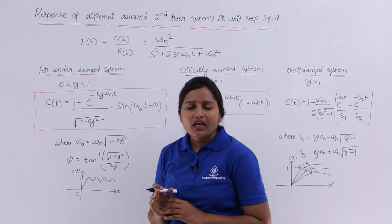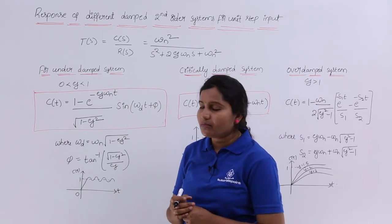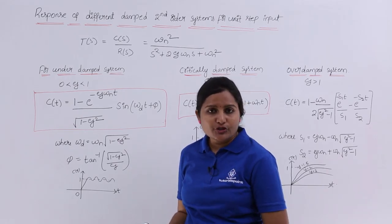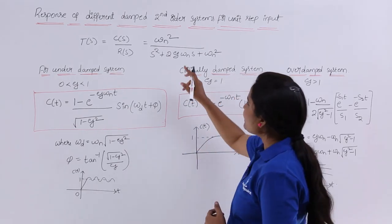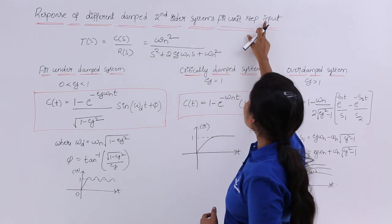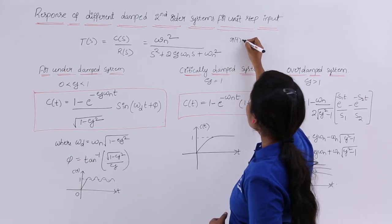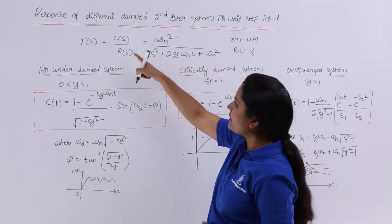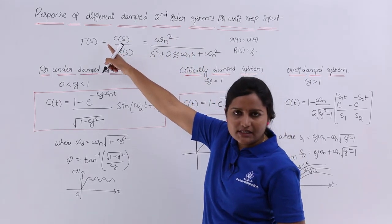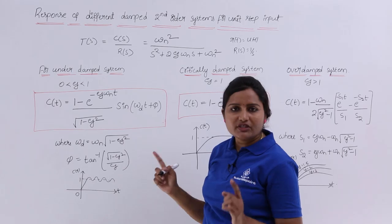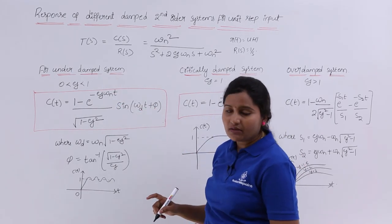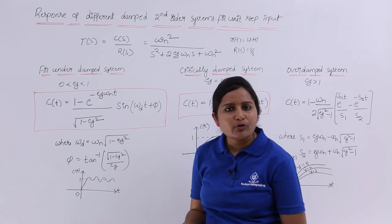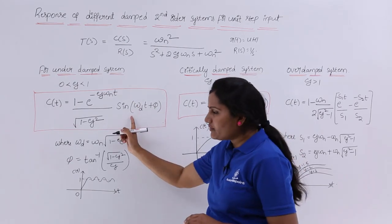For an under-damped system, if you want the time response you need to substitute the zeta value between 0 and 1 — that means 0.5 or 0.2 or any fraction. If you consider this zeta value, then R(s) = 1/s because r(t) for unit step is 1/s. So you substitute R(s) = 1/s, send R(s) to this side to get C(s), and substitute zeta between 0 and 1. Then by taking the inverse Laplace transform of that C(s) you get c(t), the time response of the under-damped second order system.